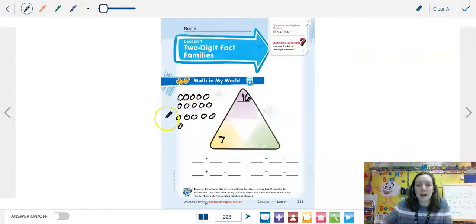So we have 5, 10, 15, 16. She threw seven: 1, 2, 3, 4, 5, 6, 7. So then we have 5, 6, 7, 8, 9 left. You could also just know that if I took 7 from 16, it would be 9. Or you could write down 16 minus 7.